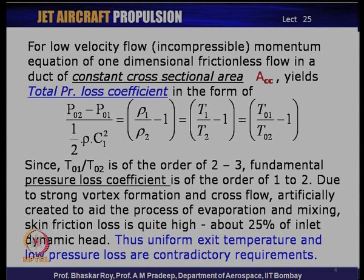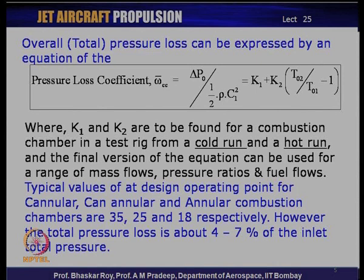Uniform exit temperature and low pressure loss are contradictory — if you want uniform temperature at the combustion chamber delivery and a reasonably lower temperature comfortable for the turbines, that is contradictory to the low pressure loss requirement because to achieve those two things you would invariably lose a lot of pressure. This is something the combustion chamber designer has to grapple with. In addition, there is the restriction of space — the size and volume available for the combustion chamber — creating contradictory pulls through which the combustion chamber needs to be configured.